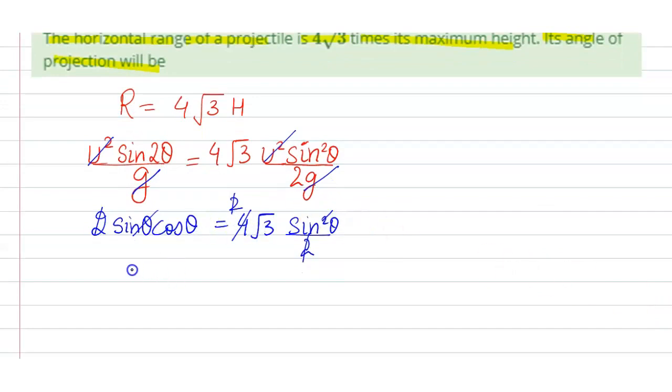We get cos theta is equal to root 3 sine theta. That means tan theta is equal to 1 by root 3. This implies that theta will be 30 degrees. So that is the answer. I hope that answers your question, thank you.